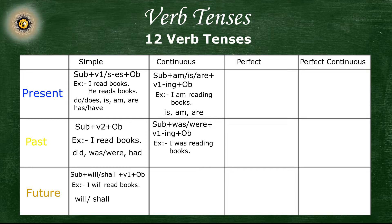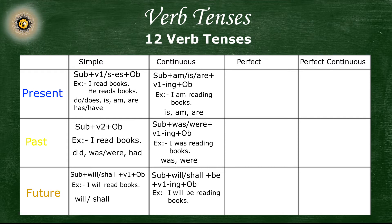Now, future progressive or future continuous tense — the sentence structure for this tense is: subject plus will be plus first form of the verb with '-ing' (present participle) plus object. The example sentence for this tense is: 'I will be reading books'.